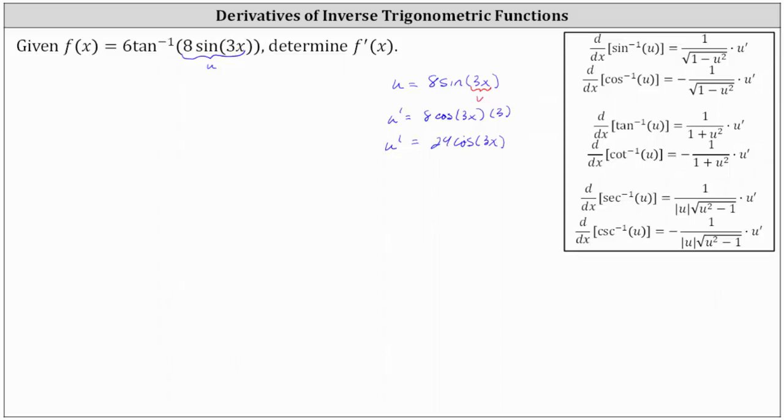And now going back to the original function, since we let u equal eight sine three x, we can think of f of x as just six inverse tangent of u. And now if we take a look at the derivative formula for inverse tangent u with respect to x, the derivative is one divided by the quantity one plus u squared times u prime.